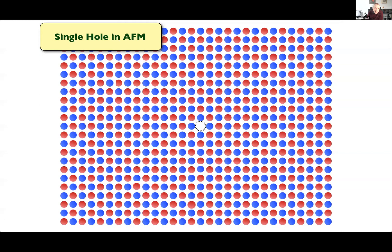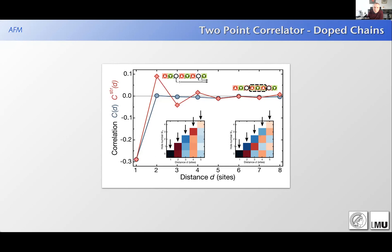A question confirms the squeezed-space analysis: for each shot, you have an occupation number, and you either compute a string correlator or literally remove holes and squeeze the system together as if there were no holes, then extract the two-point or three-point correlation function from this reconstructed configuration.